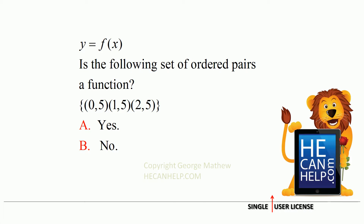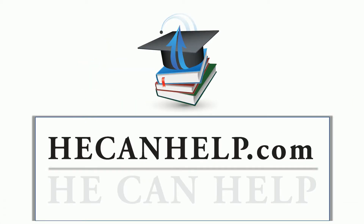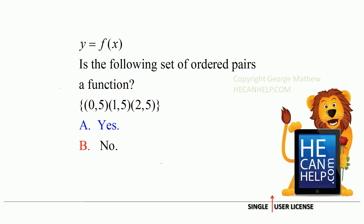It is perfectly okay for multiple inputs to have the same output. The multiple inputs are 0, 1, and 2. For all three, the output is 5. So the answer is yes — it is a function.